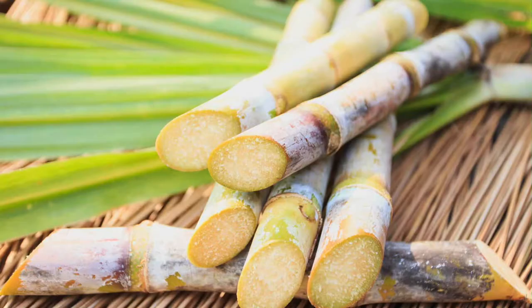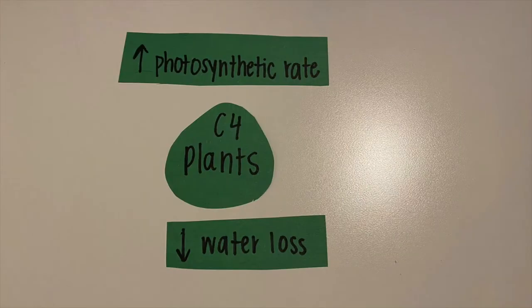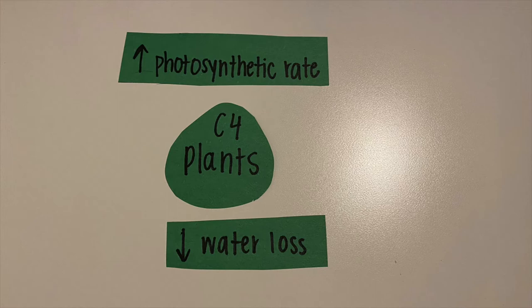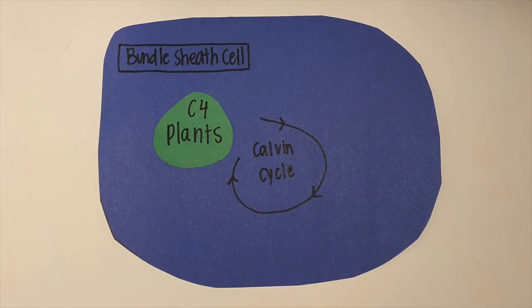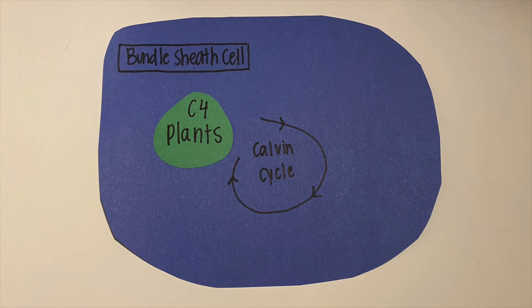Examples include corn, sugarcane, and sorghum. C4 plants photosynthesize at a higher rate and lose less water than C3 plants. C4 plants also avoid photorespiration, and they do this by going through the Calvin cycle in the bundle sheath cell.